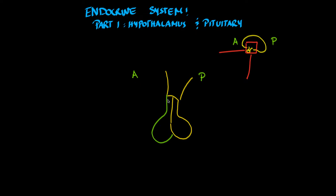This clip is going to be part one of a two-part endocrine system series. In this clip, we are going to start with the hypothalamus and the pituitary. These two glands are the master endocrine glands of the endocrine system, so it's important to understand their relationship, the hormones that they produce, and the effects of these hormones. So let's go ahead and begin.